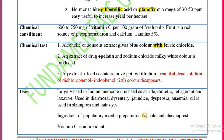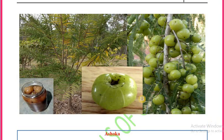The uses of Amla include being used as acrid, diuretic, refrigerant, and laxative. It is also used in diarrhea, dysentery, jaundice, dyspepsia, and anemia. The oil of Amla is used in shampoos and hair dyes. It is an ingredient of popular Ayurvedic preparations like Triphala and Chyawanprash. Amla is the richest known source of Vitamin C.